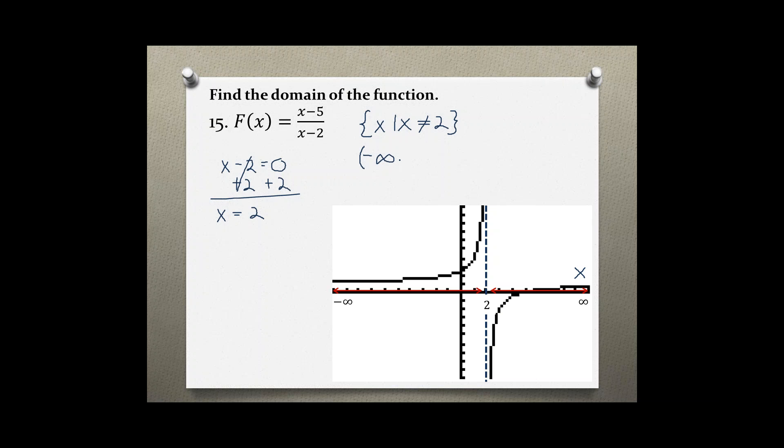The values start at negative infinity, then continue all the way to the value 2, but 2 is not included, union starting at 2 and going to positive infinity. This is finding the domain of the function in set builder notation and in interval notation.